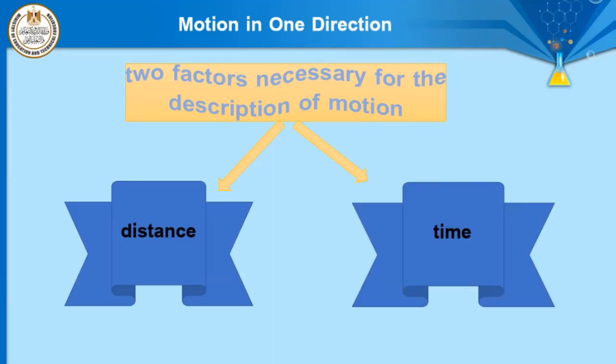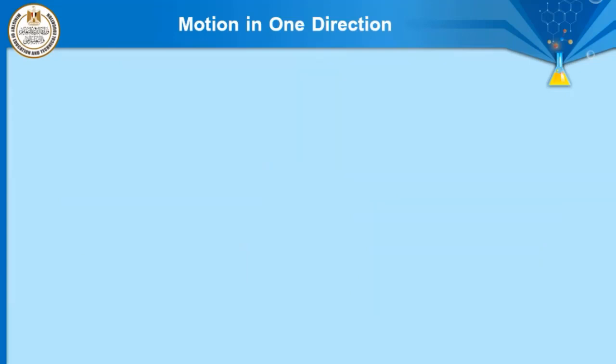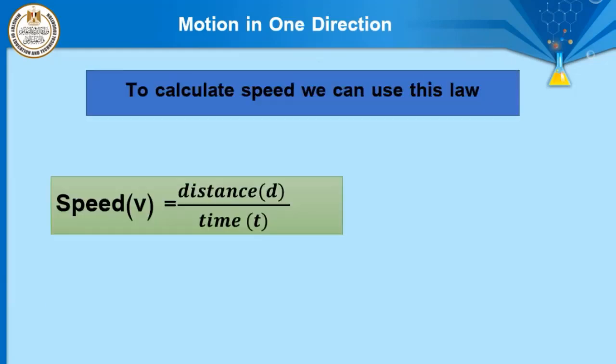From this, we can conclude that there are two factors necessary for the description of motion: distance and time. There are many questions on this part. For example: complete — the two factors necessary for the description of motion are distance and time. How can we calculate speed? We can calculate speed using the law: speed equals distance over time.